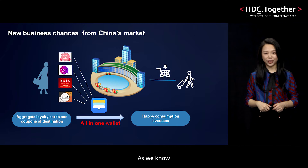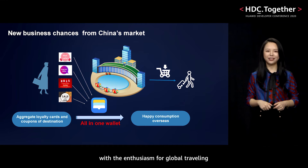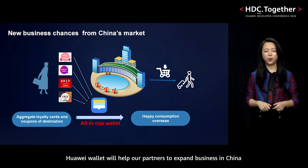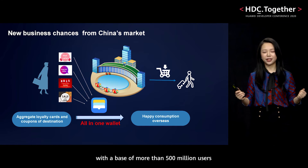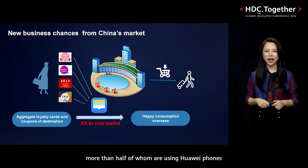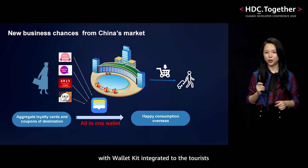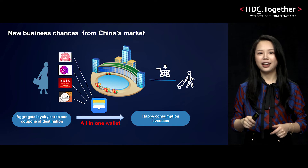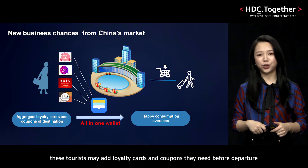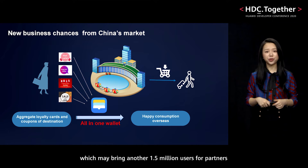The first is traveling. New business opportunities are arising from China's market with the enthusiasm for global traveling. Huawei Wallet will help our partners expand the business in China with a base of more than 500 million users. For example, each year there are about 3 million tourists from China to Indonesia, more than half of whom are using Huawei devices. Huawei Wallet will promote partner apps with WalletKit integrated to tourists, who may add loyalty cards and coupons before departure, potentially bringing another 1.5 million users for partners.